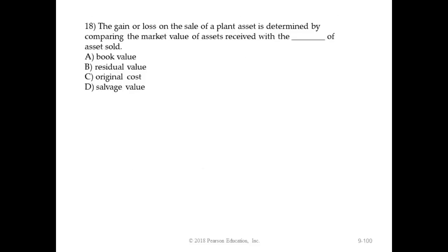Question 18: The gain or loss on sale of a plant asset is determined by comparing the market value of the asset received with — A, book value; B, residual value; C, original cost; or D, salvage value. The answer is A — book value. You always compare the market value of the assets received with the book value of the asset sold.